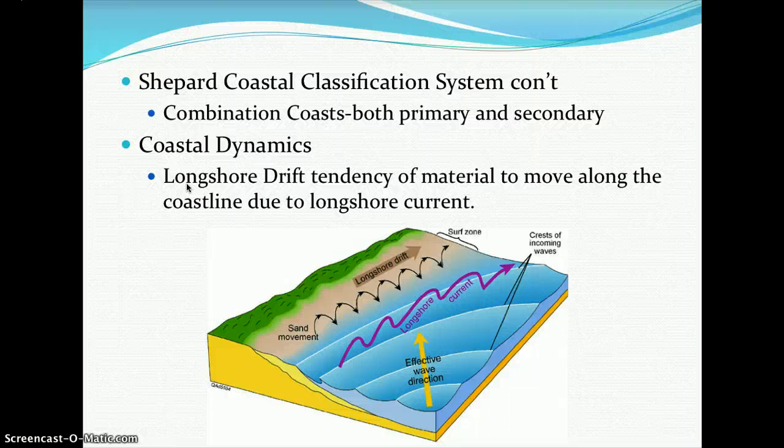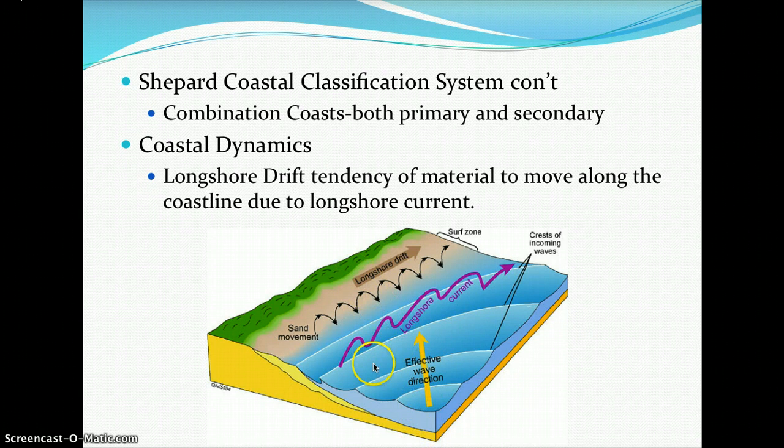At the coast, you experience longshore drift, which is the tendency of material to move along the coastline due to the longshore current. Waves come into the shoreline moving sand particles, and you get a longshore current moving perpendicular to the effective wave direction, creating a circular motion — this is the longshore drift, and sand movement progresses down the island along the surf zone.